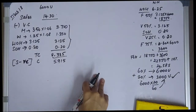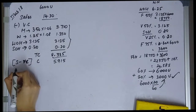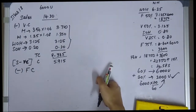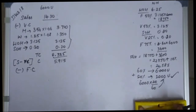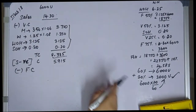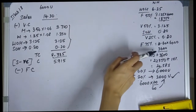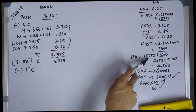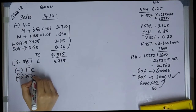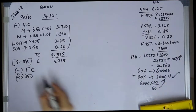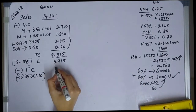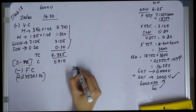Next, fixed cost. The works overhead fixed portion is 18,750 and the sales overhead fixed portion is 3,600, giving a total of 22,350. With a 10% increase, multiplying by 1.10 gives the revised total fixed cost of 24,585.